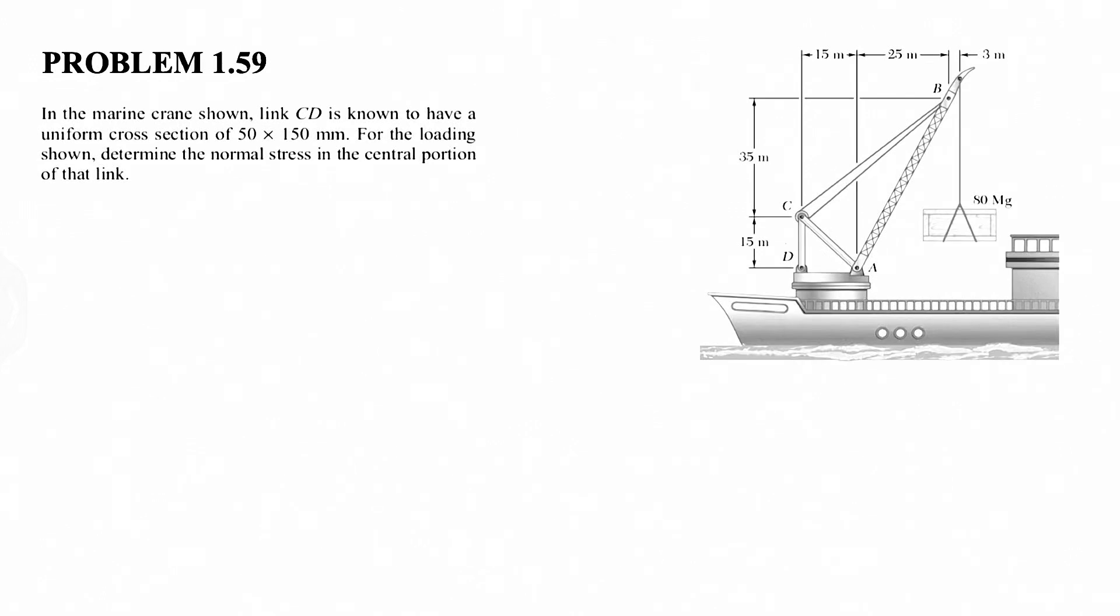All right guys, let's see how we can solve question 59 from the first chapter of the mechanics of materials, Beer and Johnson. In this one, we have a marine crane that has a link CD that has a uniform cross section of 50 by 150 millimeters. And for the loading shown, we need to determine the normal stress in the central portion of the link.